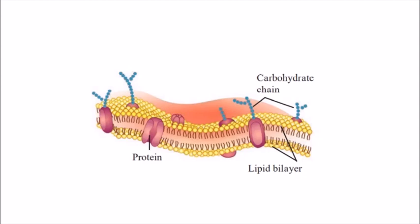In the plasma membrane, there are protein molecules and carbohydrate chains. It is made up of two layers — a lipid bilayer, that is two layers of phospholipids, in between which the protein molecules are embedded.